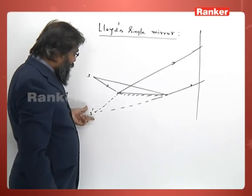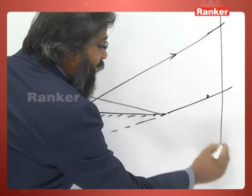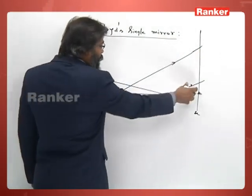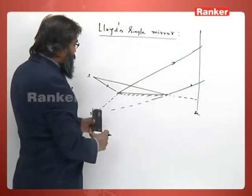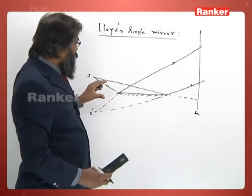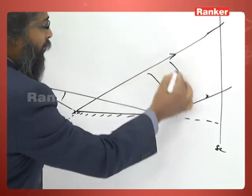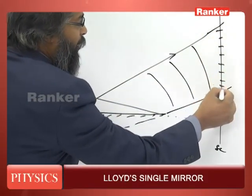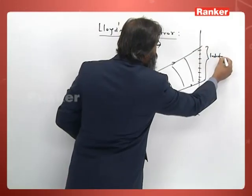On this screen we get an interference pattern. The whole screen is illuminated by a direct wavefront, and this reflected wavefront reaches here. This is the region where we will get the interference pattern.